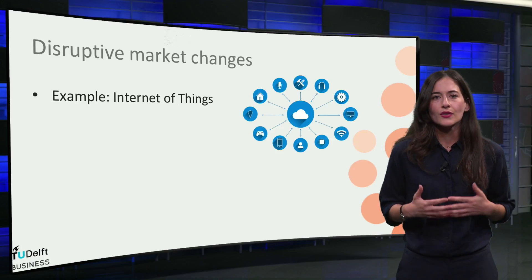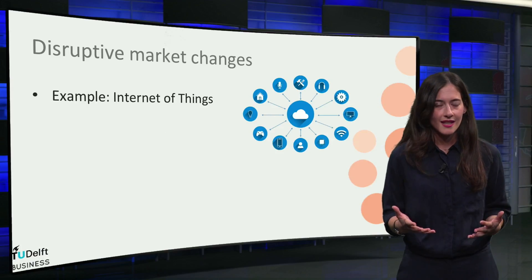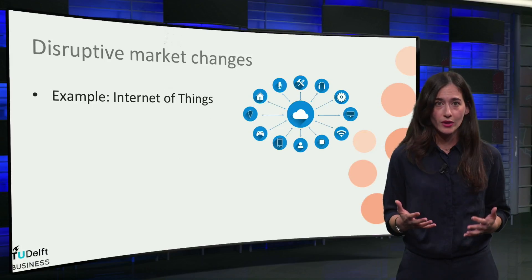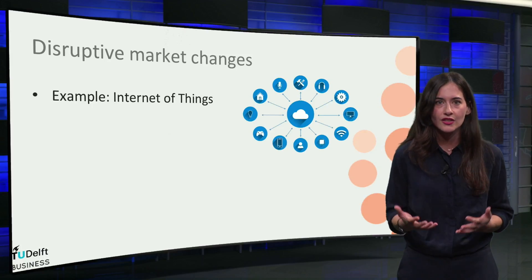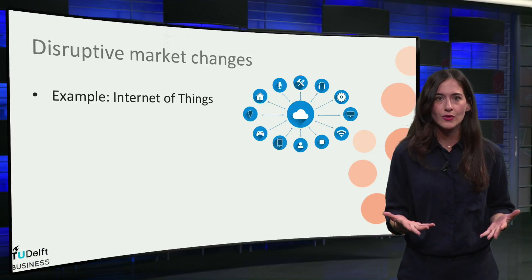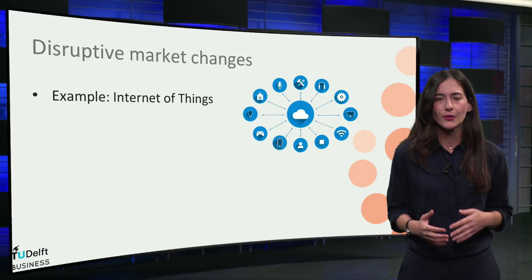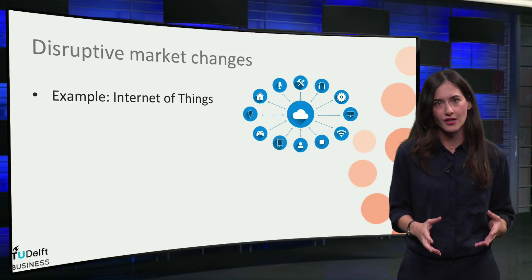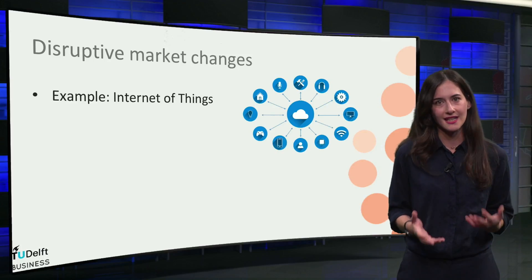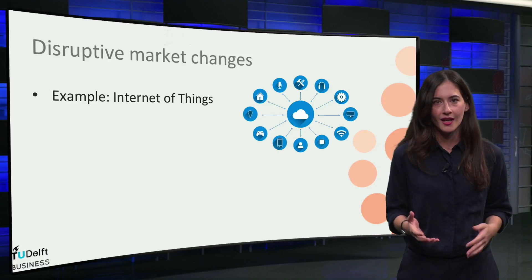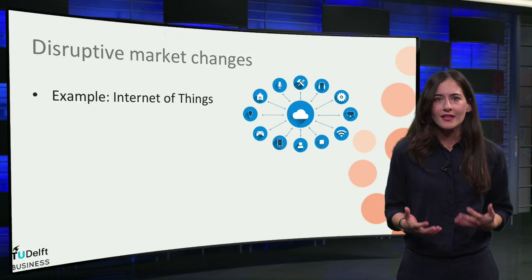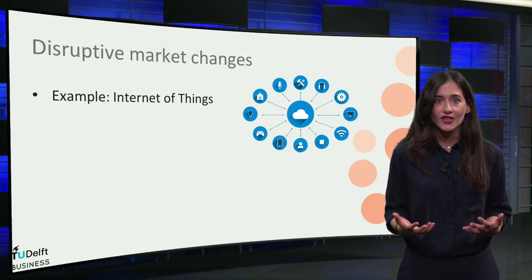If you don't know what the Internet of Things is, think of it as a network of ordinary objects, like your fridge, your clothes, or your car, that are connected to the Internet through a number of sensors that collect data. All these are connected to the Internet to exchange information.